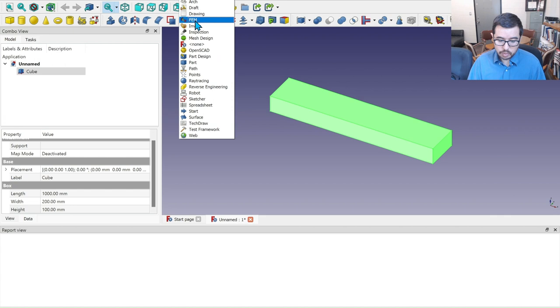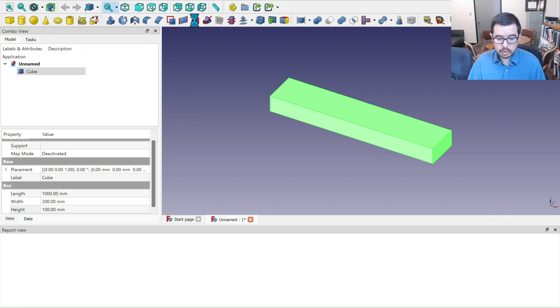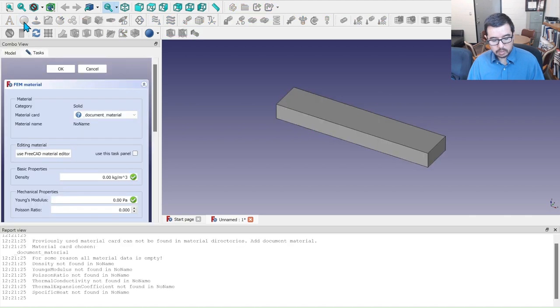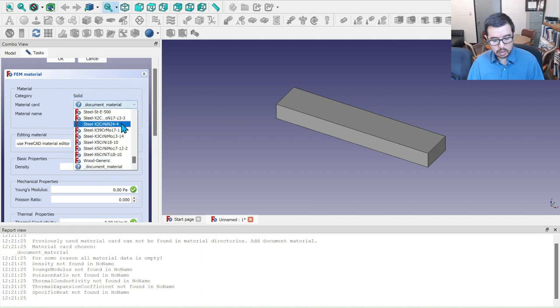We go from the part interface, you could do it in the part design, but we'll go from part interface to FEM. So we move over here, you see there. And we now have the opportunity to create an analysis container. So we're going to create the analysis container. And then we will add a material to the object.